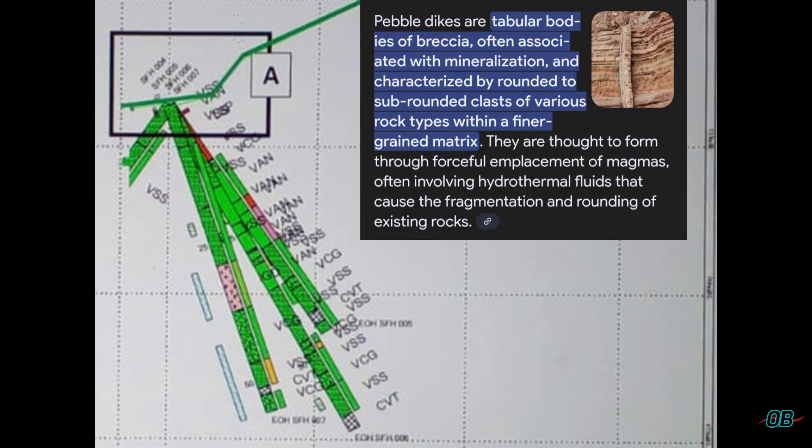Pebble dykes: tabular bodies of breccia or sub-rounded to angular clasts itself that can be also viewed as an intrusion into a body of pre-existing rock. It is important to note that pebble dykes are generally associated with mineralization.